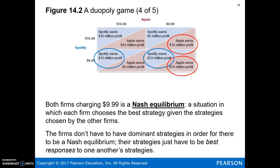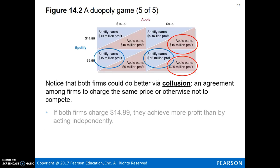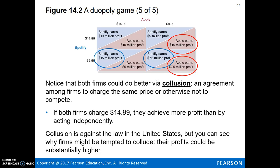Nash equilibrium doesn't require dominant strategies — it just means each firm is playing its best response to the other's strategy. You might wonder: why don't they both just charge $14.99 and each earn $10 million? That could happen — if the firms cooperated and both charged $14.99, that would be called collusion: firms agreeing to charge the same price, like price fixing, or somehow limiting their competition. They would earn more profit acting cooperatively, but collusion is against the law in the United States. You can see why firms might be tempted, though, because they would earn higher profits.